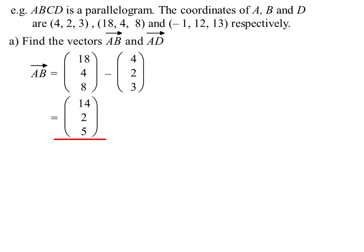So AB, but I'll write it as a column vector. So 18, 4, 8 minus 4, 2, 3. There's the vector AB, 14, 2, 5. And there's the vector AD. Again, head minus tail, minus 5, 10, 10. So again, the same thing we did in two dimensions. We're just pushing it through to a third dimension.